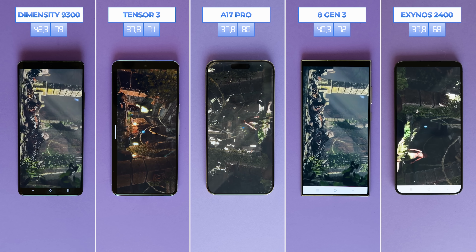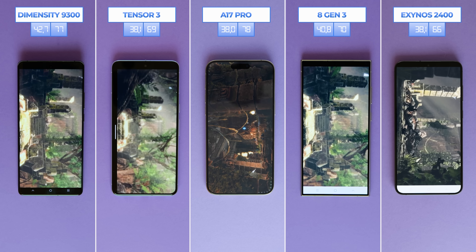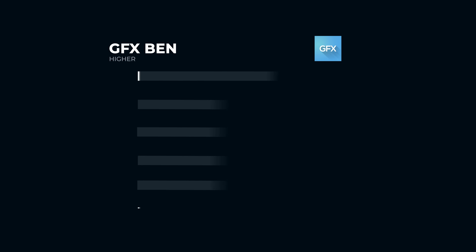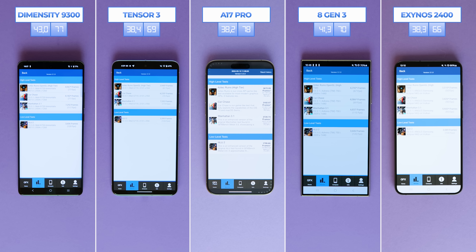GFX Bench is a high-end graphics benchmark measuring mobile performance with next-gen graphic features across all platforms. We selected four tests. In the Aztec Ruins test, Dimensity performs best, followed by Snapdragon, Tensor, A17 Pro, and Exynos in last. Surprisingly, Tensor wins the second test, followed by Dimensity, Snapdragon, Exynos, and surprisingly the A17 Pro in last place. In the third test, Tensor finishes first again, then Dimensity, Snapdragon, Exynos, and A17 Pro.